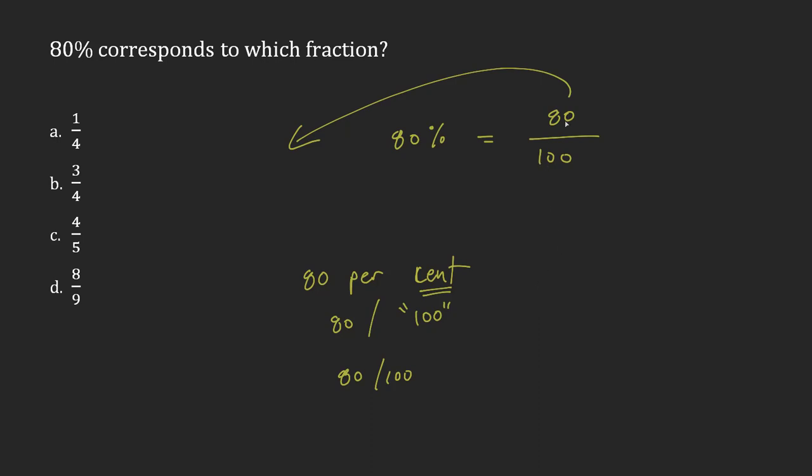For example, you can see here that 10 goes into 80 and 10 goes into 100. So if the same number goes into both of these, that means it's not as simplified as it could possibly be. 10 goes into 80 8 times, 10 goes into 100 10 times.